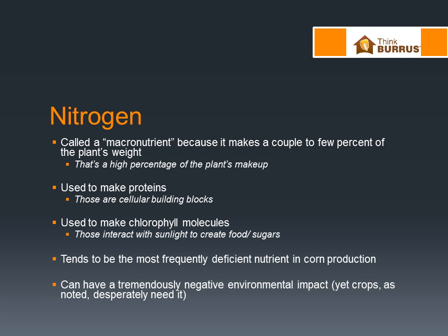Let's begin our overview by discussing why this nutrient — so needed as a fertilizer in corn and naturally fixed by bacteria in beans — is important. It really comes down to five points. Nitrogen is important because it makes up a lot of the plant's weight; it's a macronutrient. It's used to make proteins. It's part of the chlorophyll molecule. It may be easily deficient in corn. And finally, while it's desperately needed by the plant, it can also have some really nasty environmental side effects.